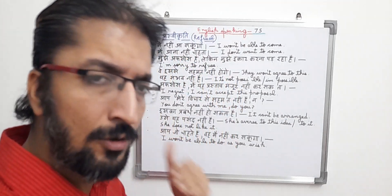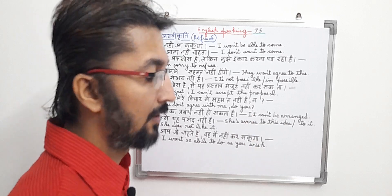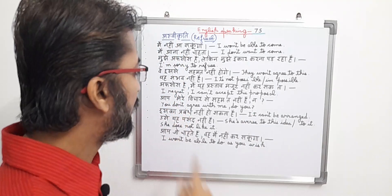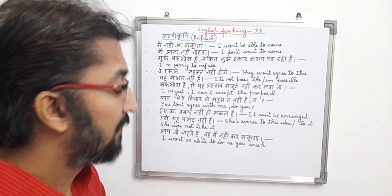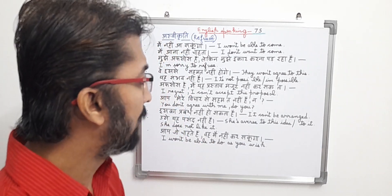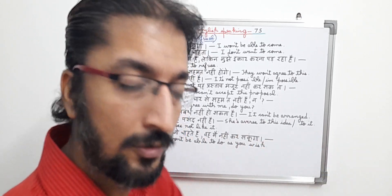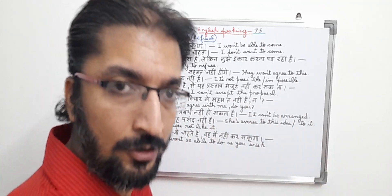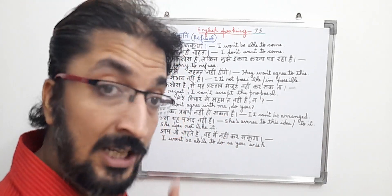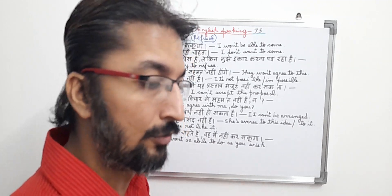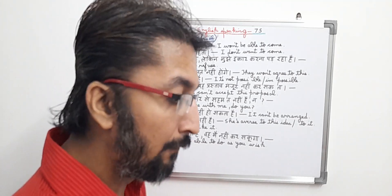In English, it means: you don't agree with me, do you? This sentence is basically an interrogative type sentence because the person is asking another person: you don't agree with me, do you? So it is both an interrogative type sentence and a refusal type sentence.